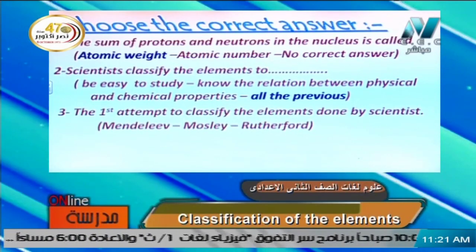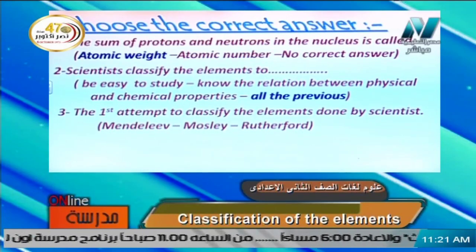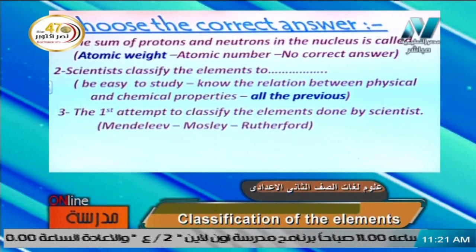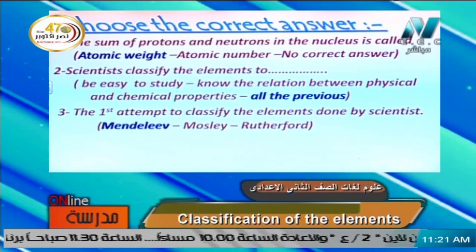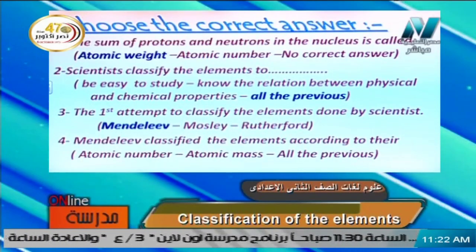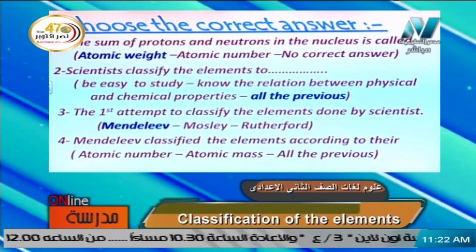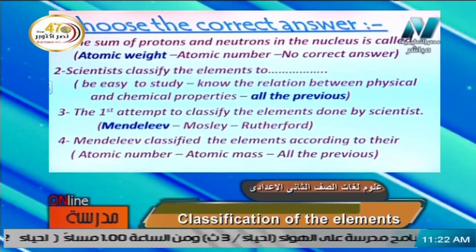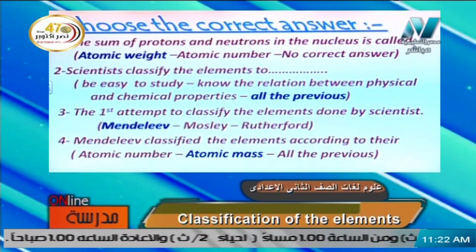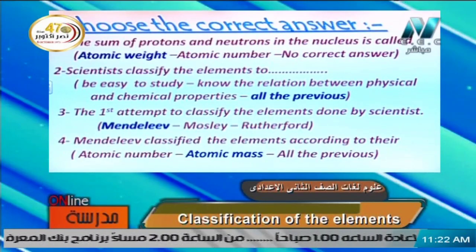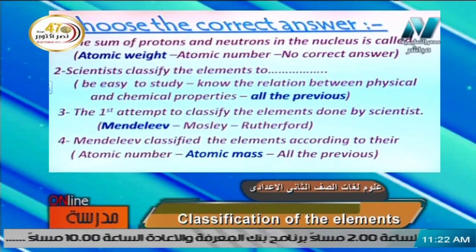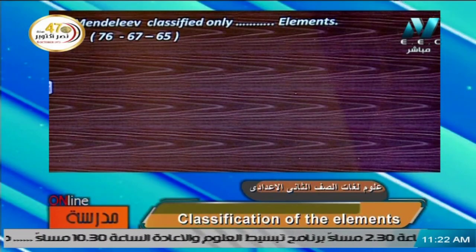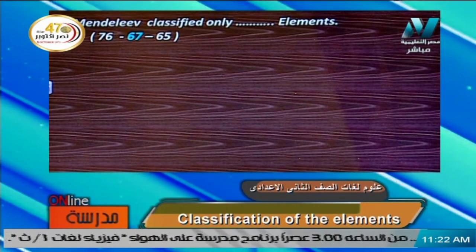Question three: the first attempt to classify the elements was done by Mendeleev. Question four: Mendeleev classified the elements according to atomic mass, which means atomic weight — the sum of protons and neutrons in the nucleus. Question five: Mendeleev classified only 67 elements. Question six: the vertical columns in Mendeleev's periodic table are called groups. Question seven: the horizontal rows are called periods.